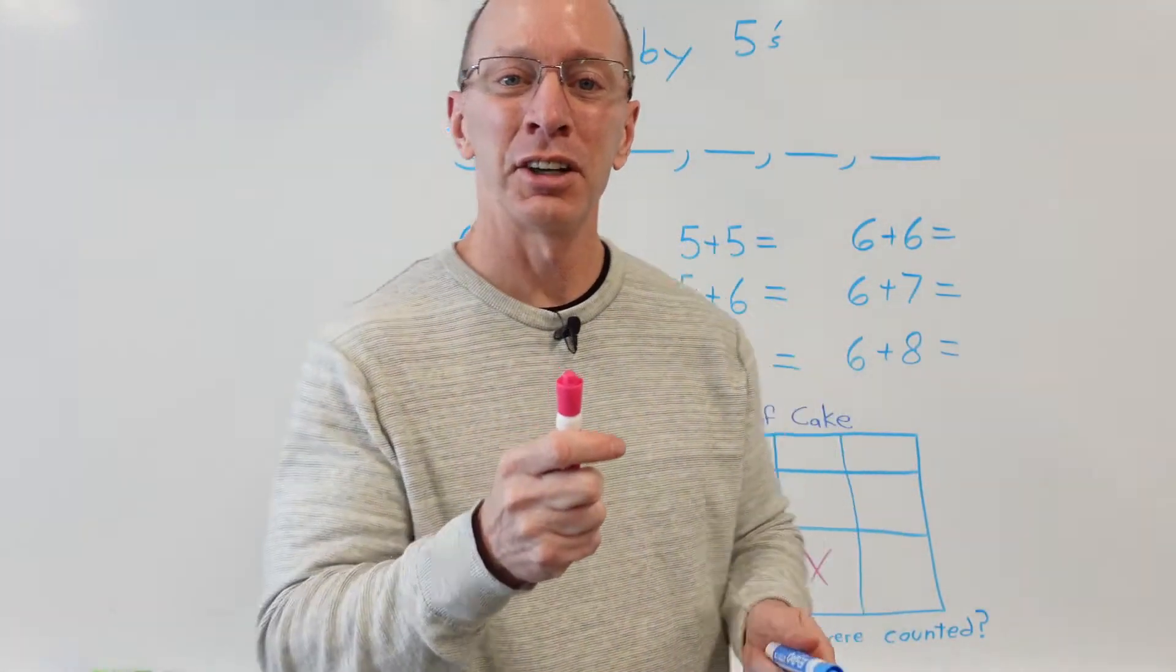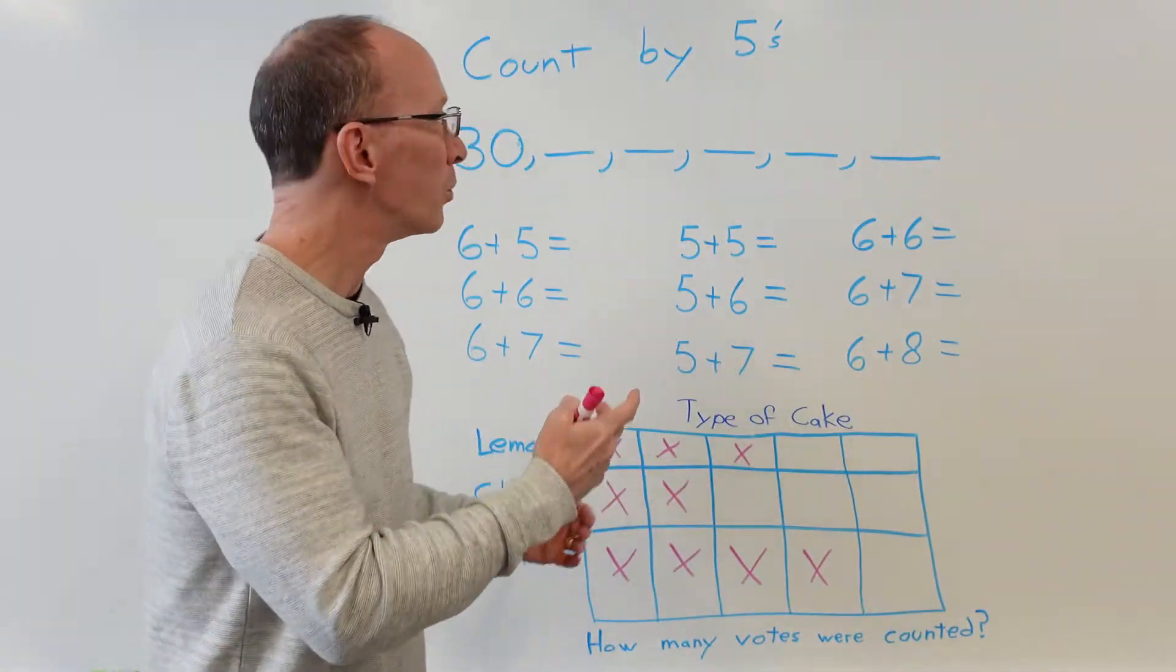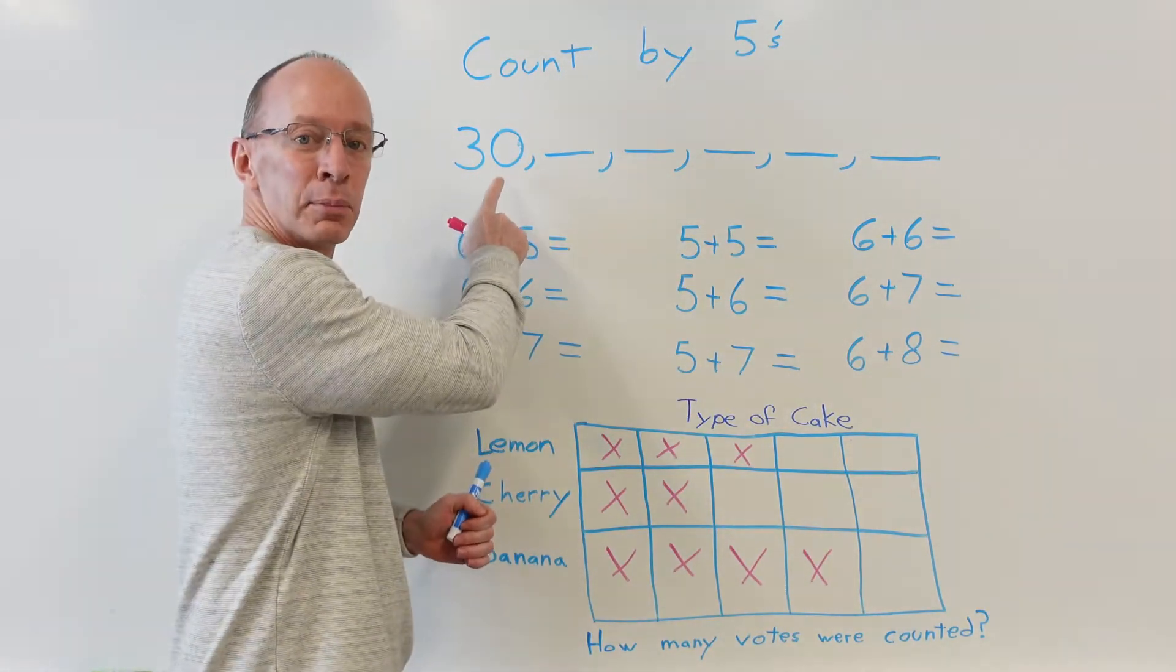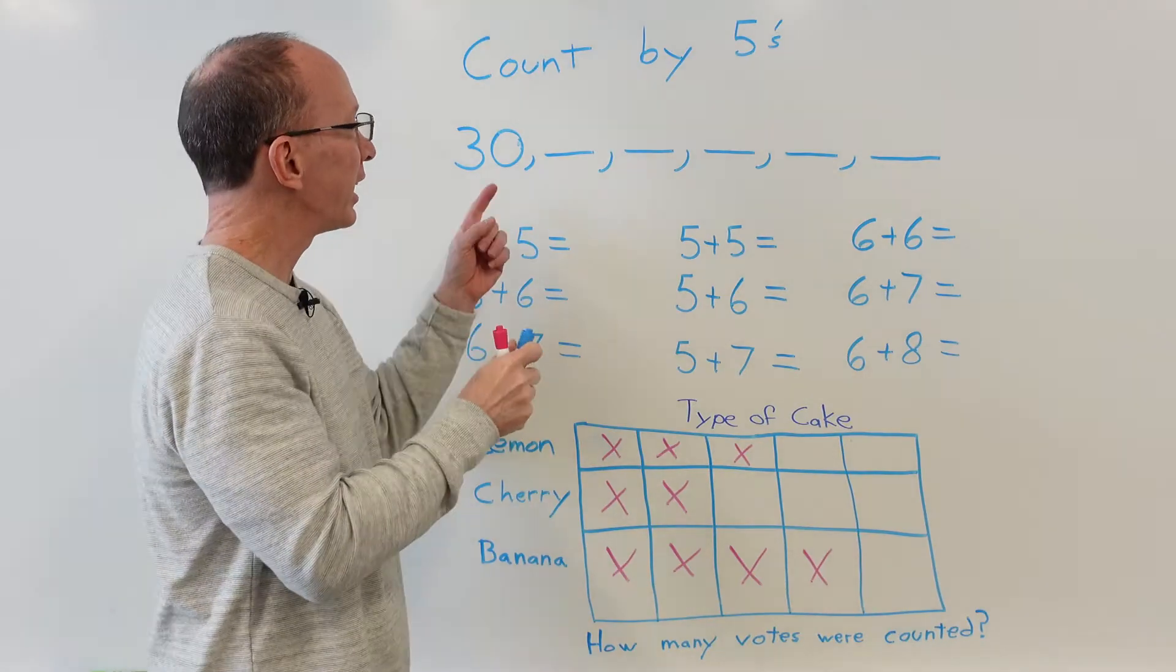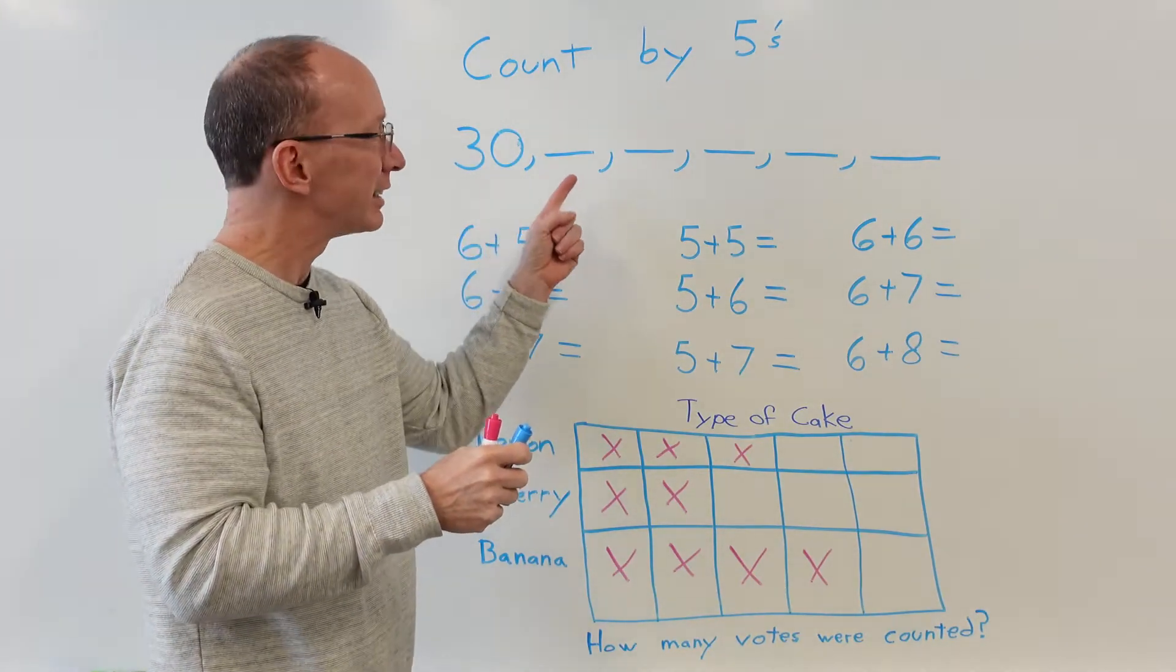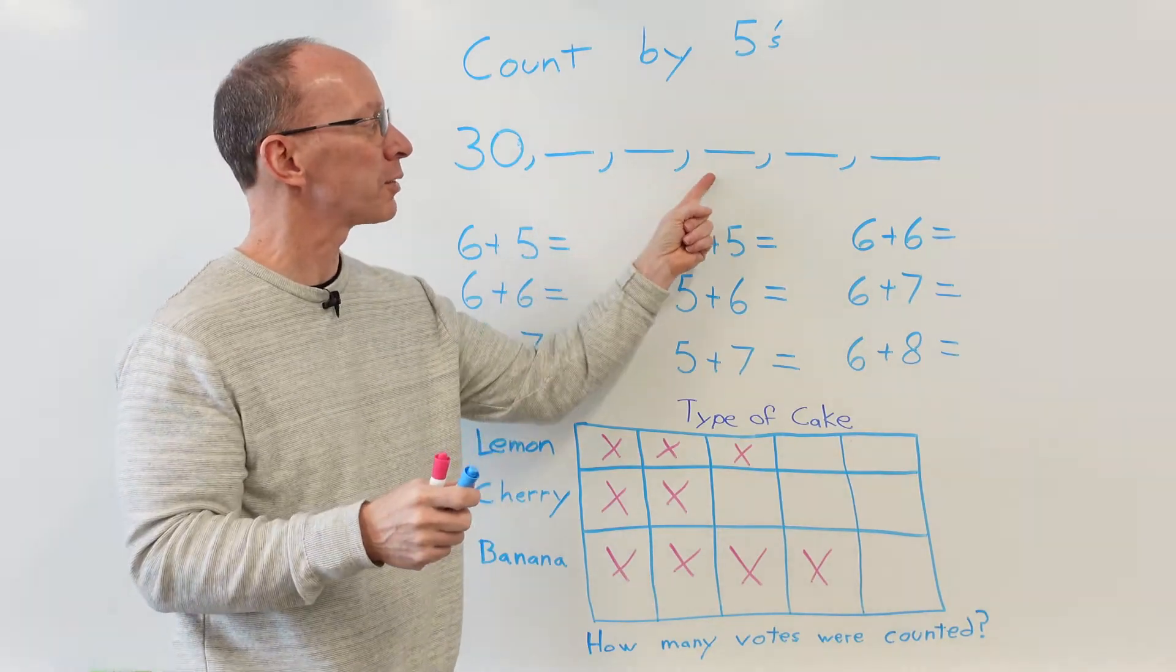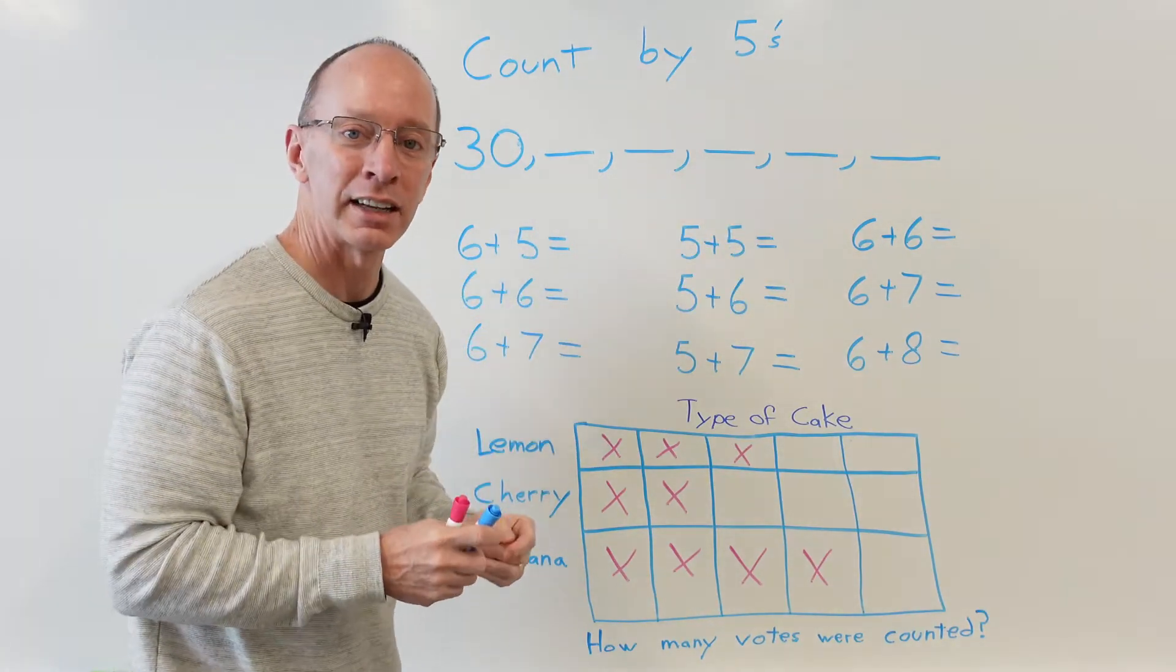Hey, welcome to the Learning Fun Show. Today on our daily work we have count by fives and I want you to start with the number 30, so you're going to add 5 to 30 and then keep on going. I want you to fill in these blanks here - you have one, two, three, four, five blanks that I want you to fill in.